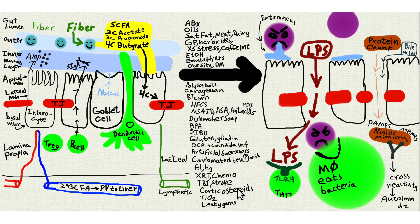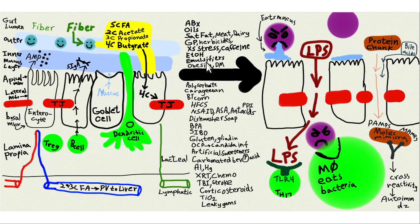Corticosteroids will also increase gut permeability. Titanium dioxide increases gut permeability. Leaky gums have a similar effect — if you have poor dentition and don't take care of your teeth, LPS, bacteria, and big protein chunks can get through there and cause more inflammation. Bile acids also get in and cause inflammation in the gut wall — high-fat diets cause more bile acid release, since bile acids emulsify dietary fat to make it accessible to pancreatic enzymes.